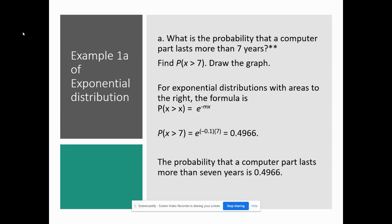So for A – what is the probability that a computer part lasts more than 7 years? Remember we talked about less than and greater than, so this was a more than. So remember when the probability that X is greater than x, we do e raised to the negative m times x. So the probability that X is greater than 7 – I put e, then I do the negative, and then I do my decay parameter of 0.1, and then I multiply it by 7.